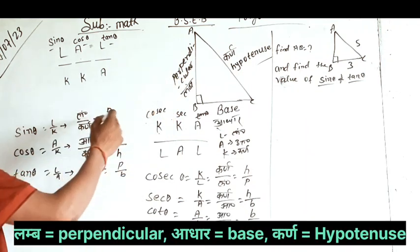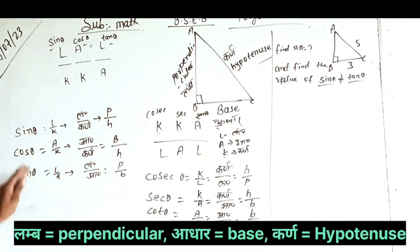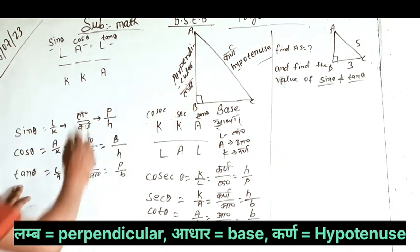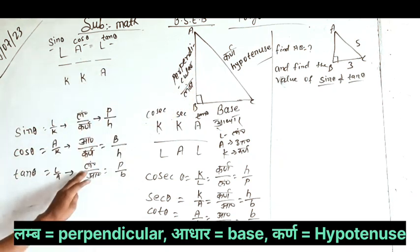Cos theta is aadhar by karn, which is base by hypotenuse, b by h. After that, tan theta is lambe by aadhar, which is perpendicular by base, p by b.